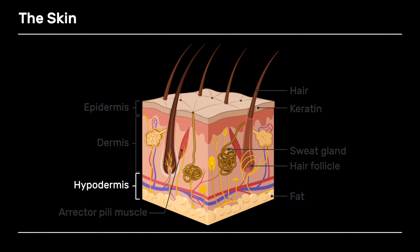We then move down to the innermost layer, called the hypodermis, and the hypodermis contains varying amounts of fat, or adipose tissue as it's medically known. The amount of adipose tissue varies depending on the body region — there's not a lot in your eyelid, but in areas such as your abdomen or your thighs there may be more.